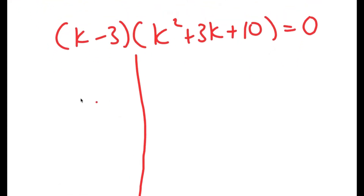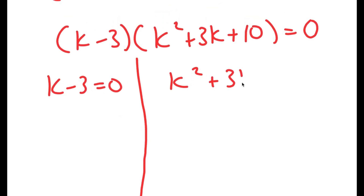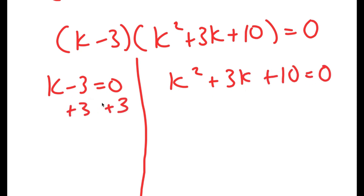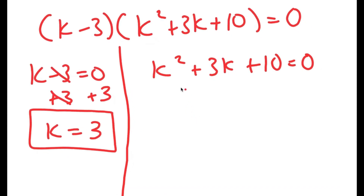Now I'm going to divide this into two different equations. I have k minus 3 equals 0, and k squared plus 3k plus 10 is equal to 0. For k minus 3 equals 0, I can add 3 on both sides, so I get k is equal to 3. So this is one solution of k.